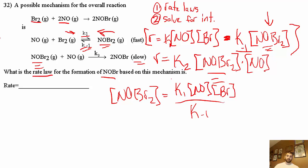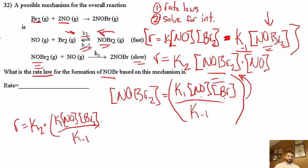Now what we're going to do is plug this in for our NOBr2 in our rate law because we got NO, we got Br which are reactants, so now we don't have an intermediate in there anymore. We get rate equals K2 times K1 NO Br2 all over K minus 1 times concentration of NO.